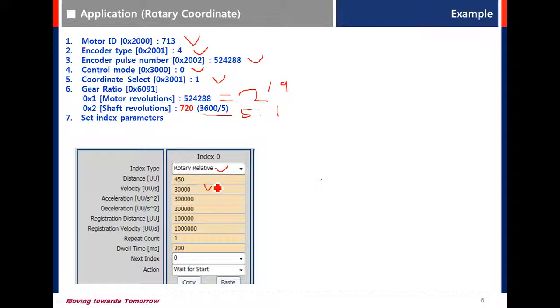That is 100 RPM in the speed of final load. Acceleration set 300,000. It is 100 milliseconds. Dwell time, 200.